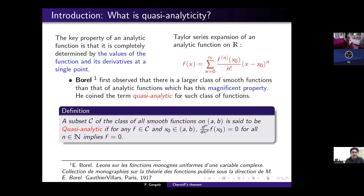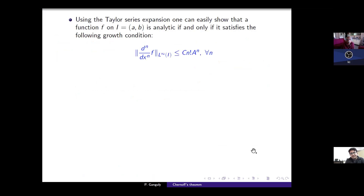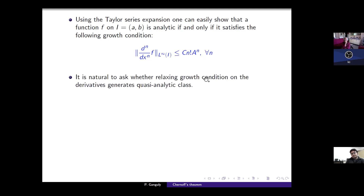The natural question is how to find such a class. We start with analytic functions. It is clear that analytic functions are also quasi-analytic. A function is analytic if and only if the L-infinity norm of the n-th derivative is controlled by n-factorial times A to the power n, where A is some constant depending on the function. Since we are demanding quasi-analyticity, which is less than analyticity, it is natural to allow more growth. So it is natural to ask whether relaxing the growth condition on the derivatives generates a quasi-analytic class.